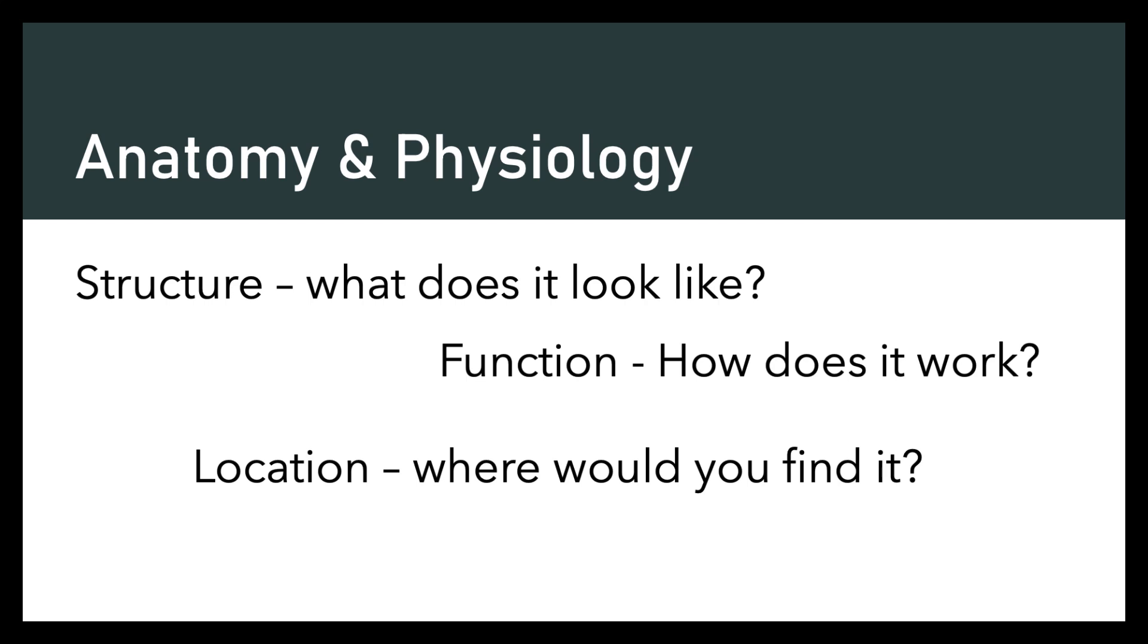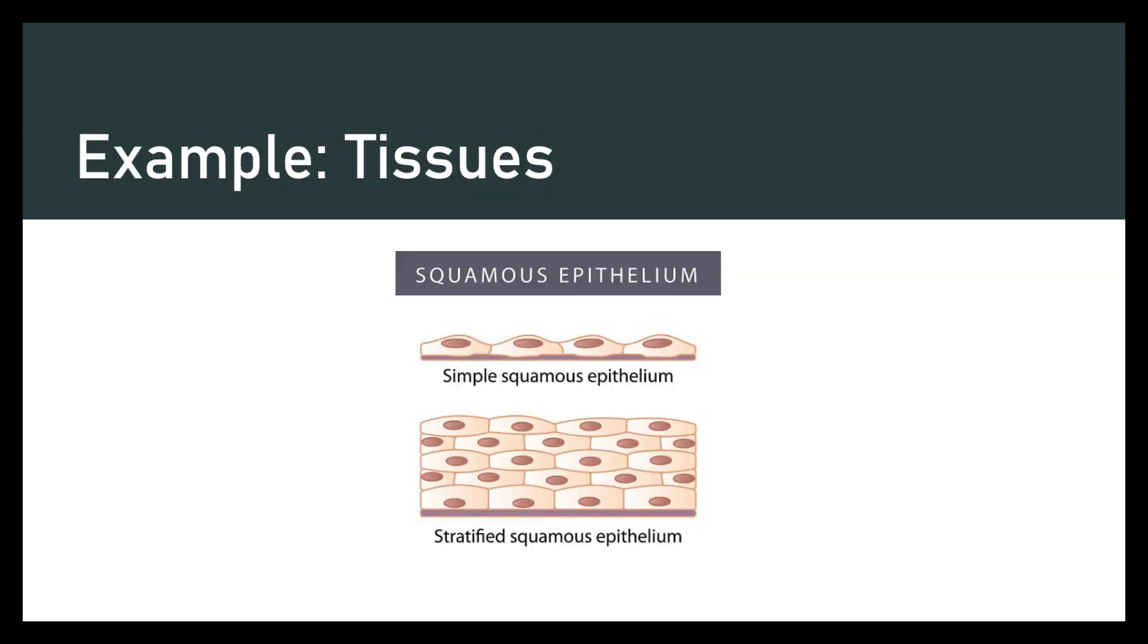Let's look at an example of how function is related to structure and location. In a couple weeks we're going to be learning about tissues. Here you can see two different types of tissues. One has a single layer of cells. The other has many layers of cells. Take a minute and think which one would be better at protecting underlying layers of tissue and which one would be better at allowing materials to pass through it very quickly.